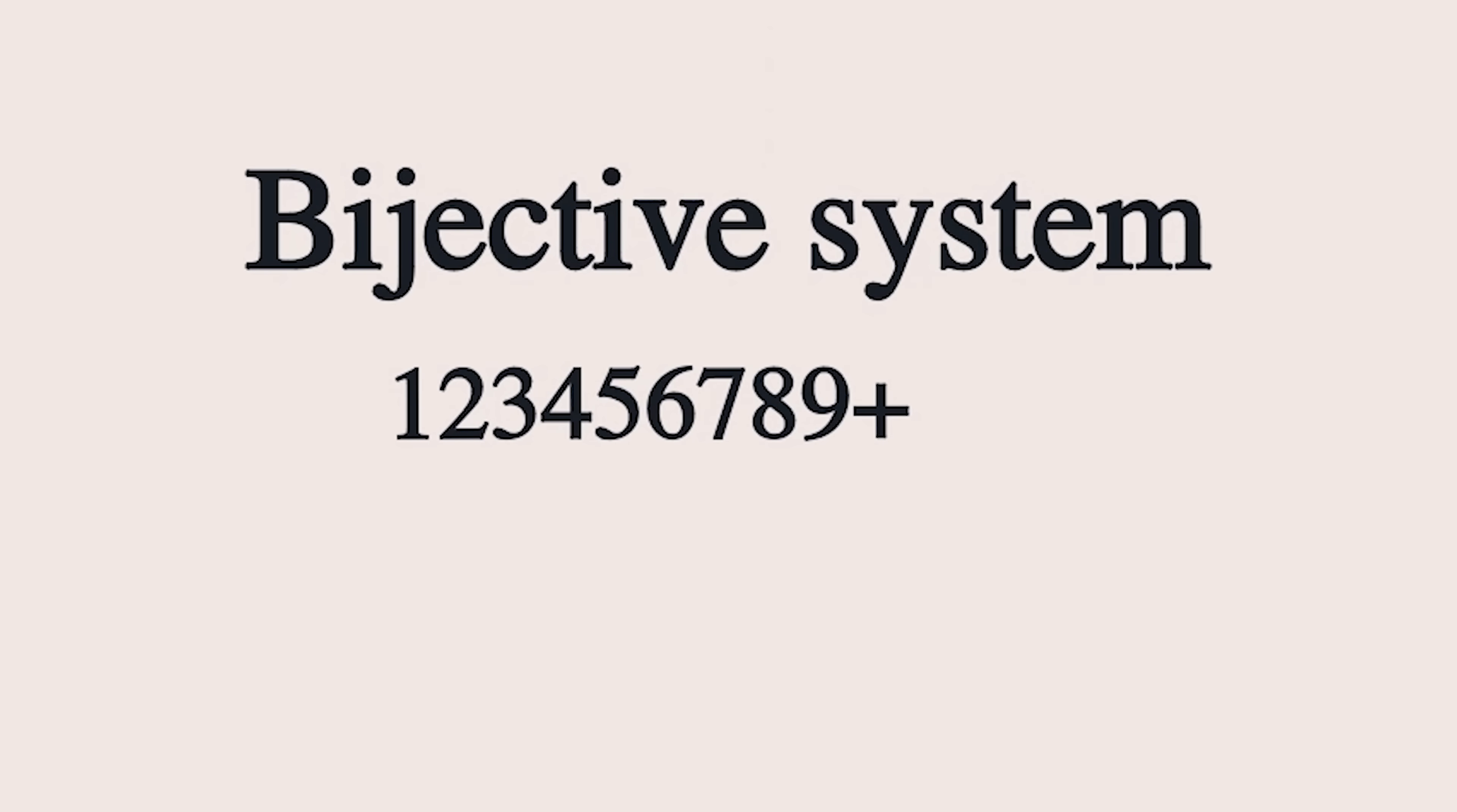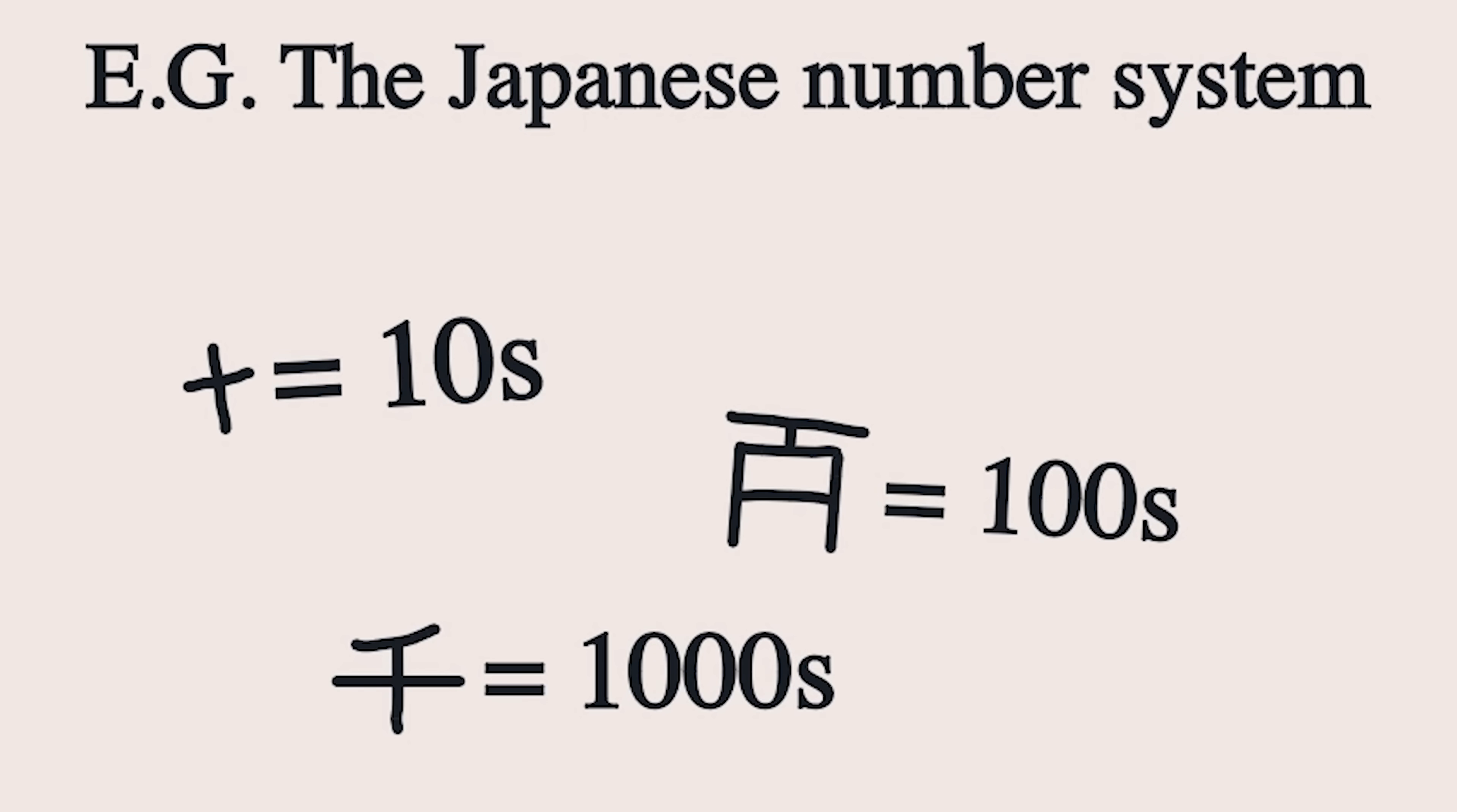One other variation we can make to the standard base formula is called a bijective system. This is where we start counting from 1 instead of 0, and then make unique symbols for each new digit we go up to signify what we're actually talking about. This is what Japanese uses, and while it's a little clunky, it's still nice and effective.